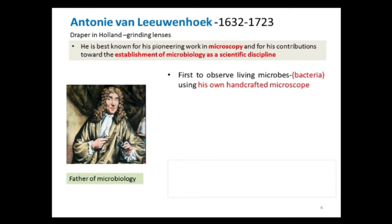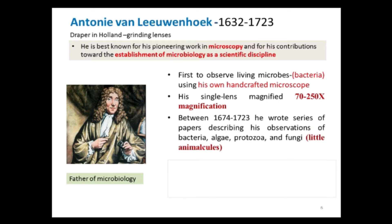Van Leeuwenhoek constructed his own handcrafted microscope to observe living microbes. His single lens magnified up to 70 to 250 times magnification. Between 1674 and 1723, he wrote a series of papers describing his observations of bacteria, algae, protozoa, and fungi, and he called them little animalcules. The term little animalcules was coined by Antony van Leeuwenhoek to refer to the microorganisms he observed in specimens like rainwater and tooth scrapings. The term is used to describe microscopic animals or protozoids.